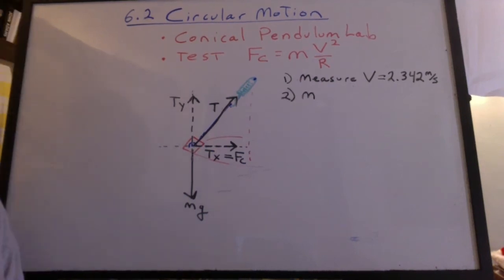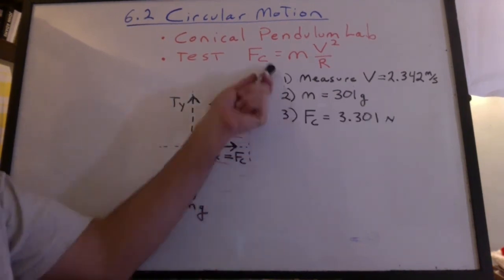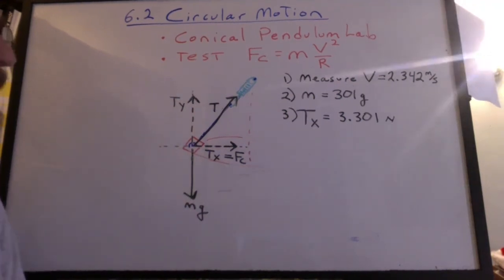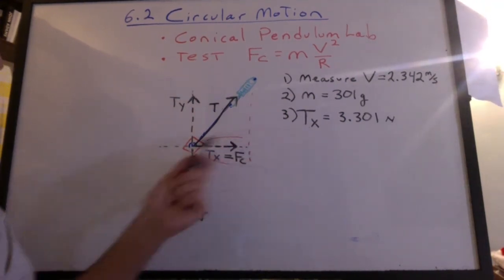I put the bottle on the scale. I got 301 grams. Using the formula, I got Fc to be 3.301 newtons. And that's also the x component of the tension of the rope.